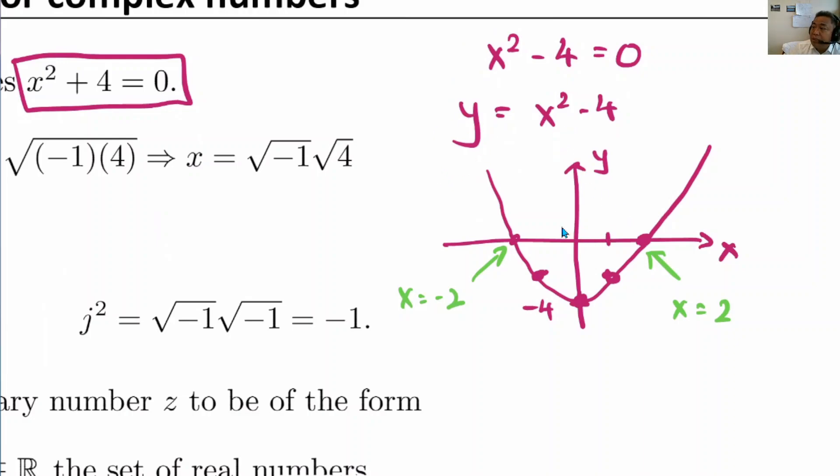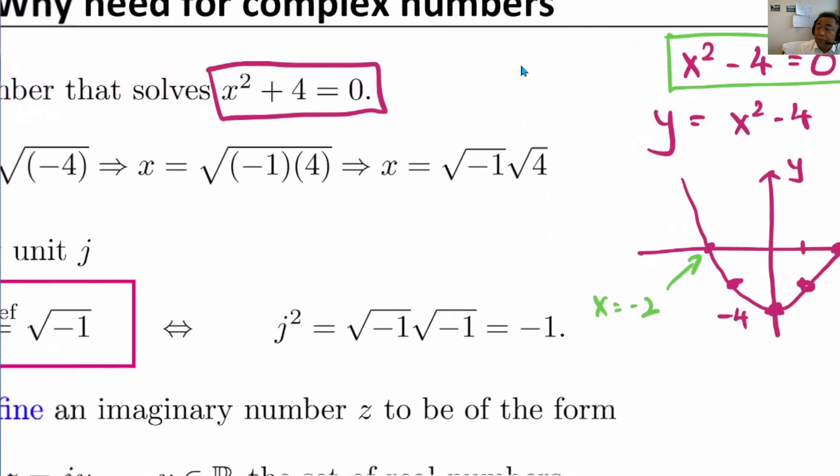Alright, so we realize that to solve for this equation, then x can be equal to plus or minus 2 as indicated by this curve crossing the horizontal axis here. Okay, we know how to solve for x squared minus 4. What about x squared plus 4?